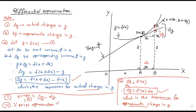The percentage error will be equal to e divided by y, times 100 percent. Here e is the error and y is the actual value of the function — the real value. Multiplying by 100 percent gives you the percentage approximation of the error.